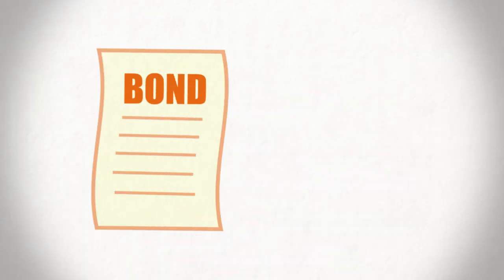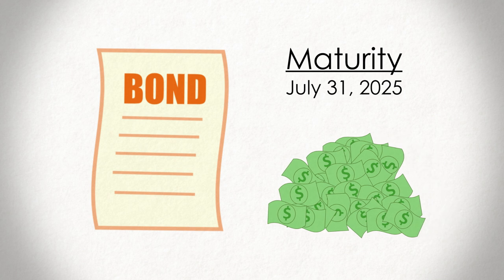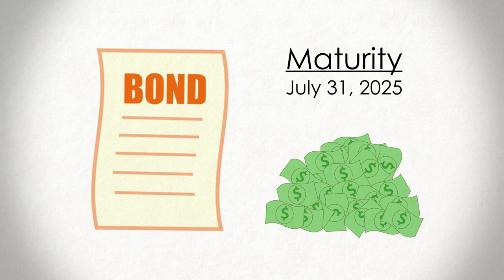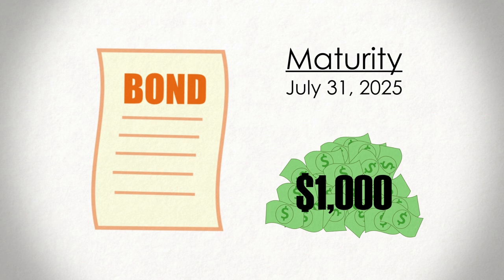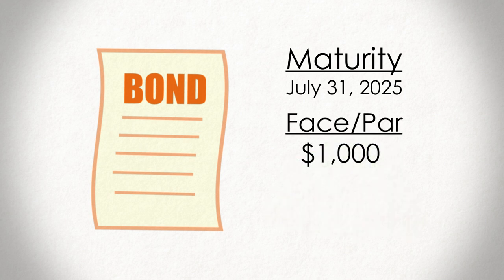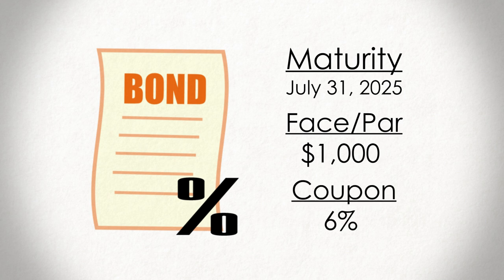Standard bonds will often have their features defined when you purchase them. They will specify when the bond matures and the amount you will receive at this time. This amount, which is commonly $1,000 per bond, is known as the bond's face value or par value.